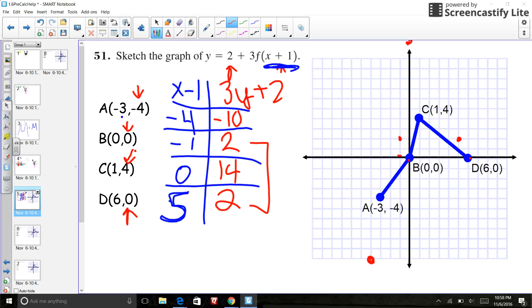So what happened was I doubled this, or I did it times 3, but it was already at 0. And then I shift left 1 up 2.